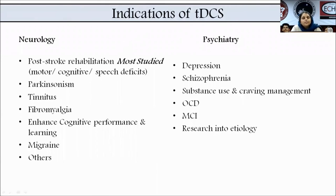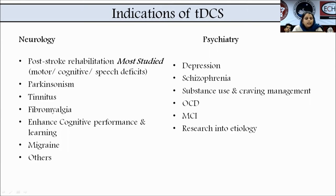What are the indications of tDCS? Due to time constraints I'll be discussing more on the psychiatry part. Neurological indications include post-stroke rehabilitation — more studied to improve motor symptoms, cognitive problems, and speech deficits, with good evidence for aphasia — as well as Parkinsonism, tinnitus, fibromyalgia, enhancing cognitive performance and learning, and treatment of migraine, as we can remember from the torpedo fish story.